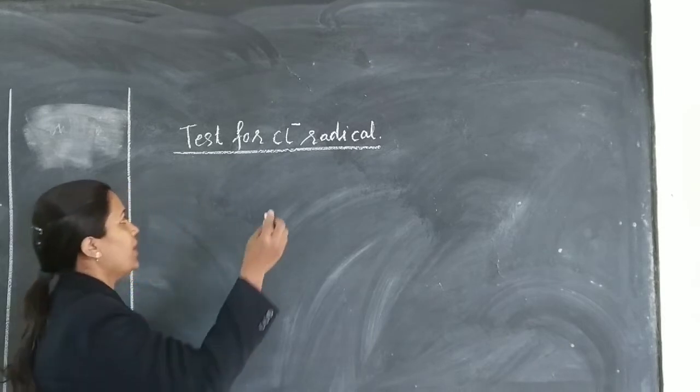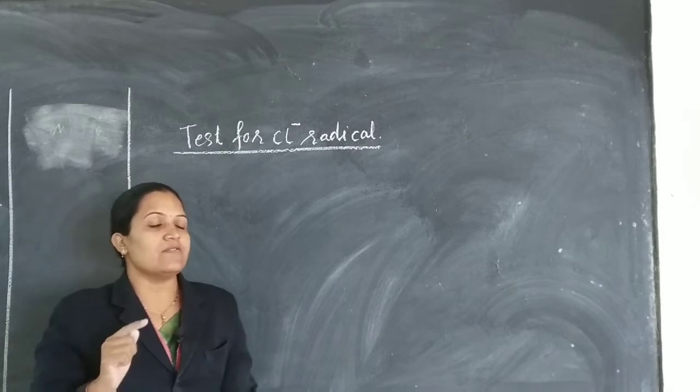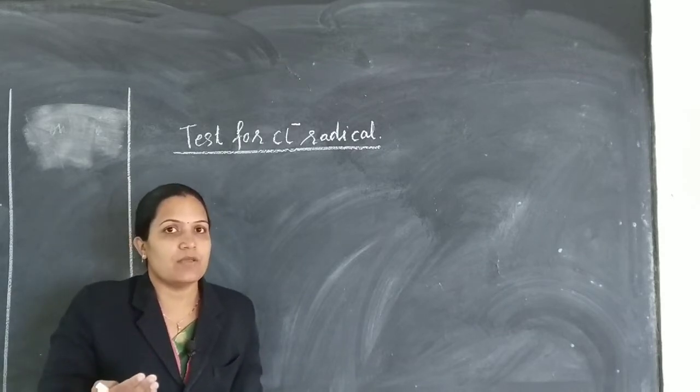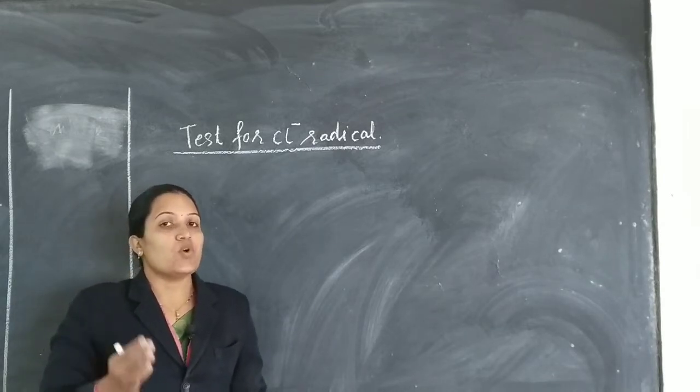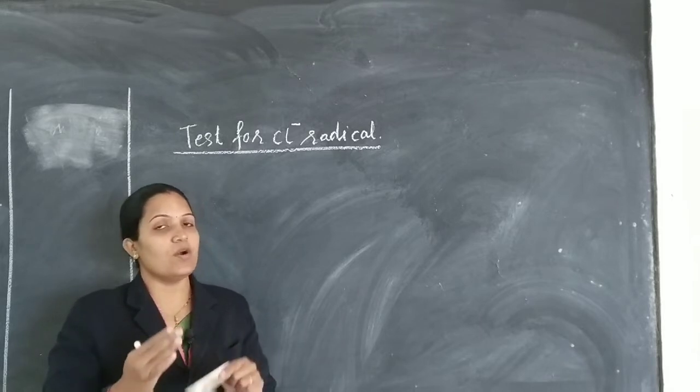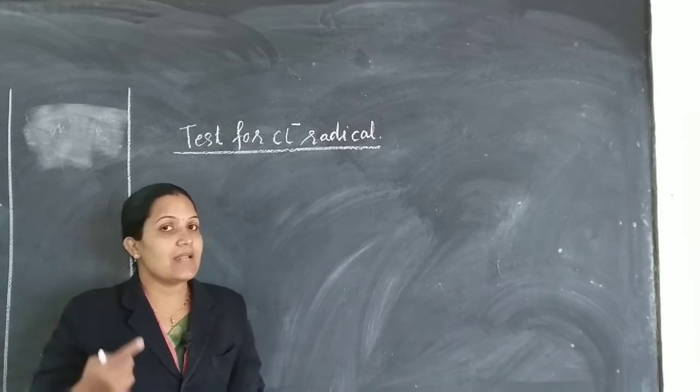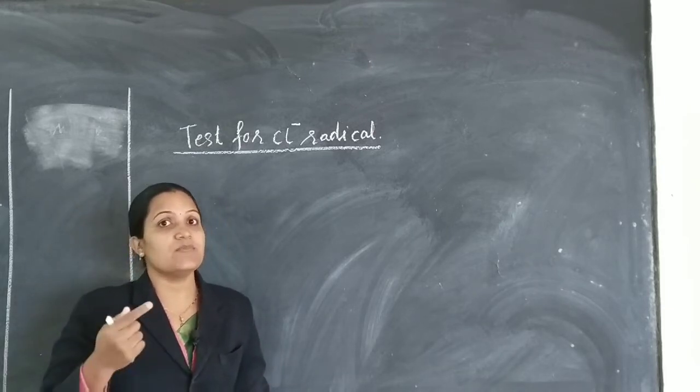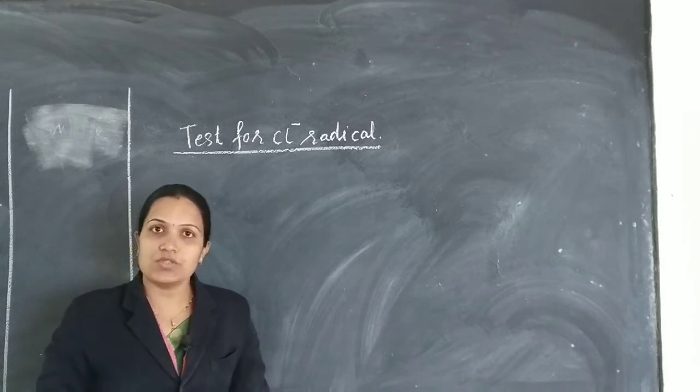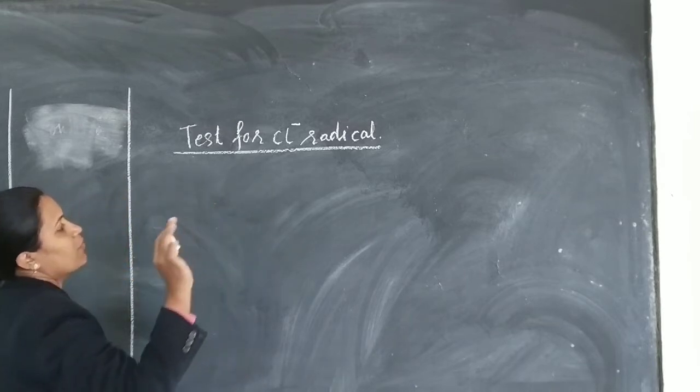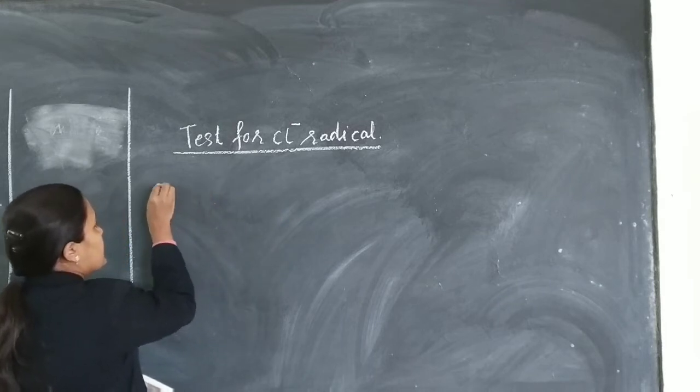So in this class, we are going to start a test for Cl negative radical. We know that Cl negative, like sodium chloride, magnesium chloride or any other chloride, will be identified in our salt. For that, there are proper steps. First, what is happening in the test? First of all, the preliminary test, which I will explain in the practical way. When you start this, what do you want to memorize? First of all, test for Cl negative, you have to start these steps.